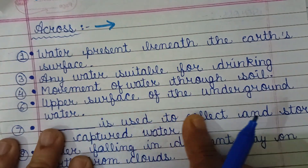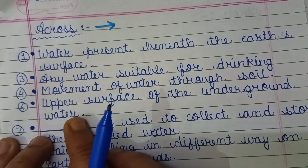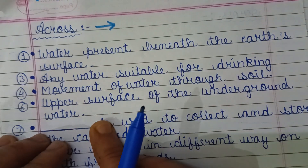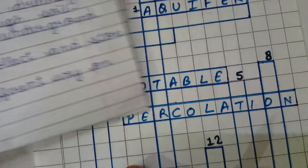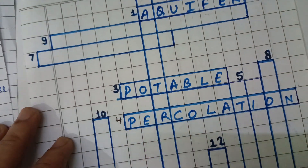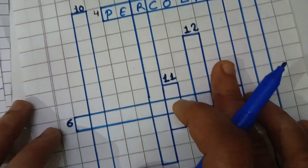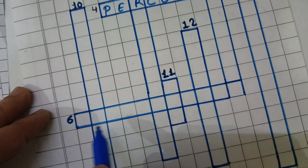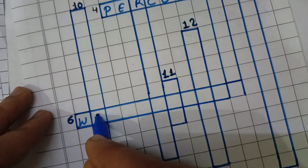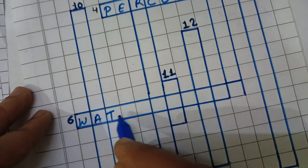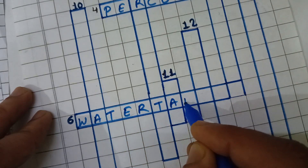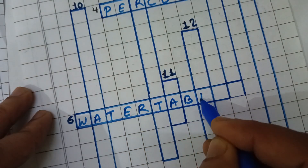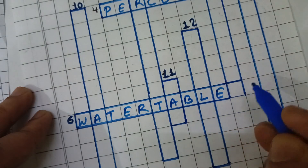Sixth across: the upper surface of the underground water is known as water table — T-A-V-L-E — water table.